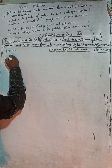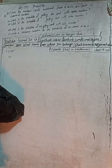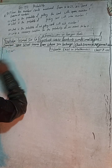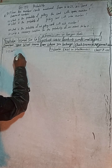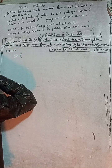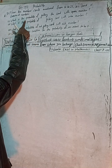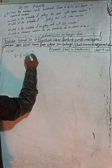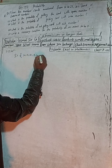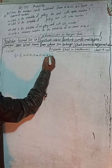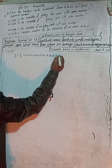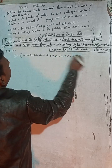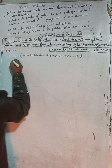We can start now. First of all, the sample space S is equal to — from the number cards, numbers from 10 to 25. So 10 to 25 means: 10, 11, 12, 13, 14, 15, 16, 17, 18, 19, 20, 21, 22, 23, 24, 25.